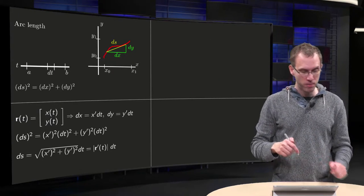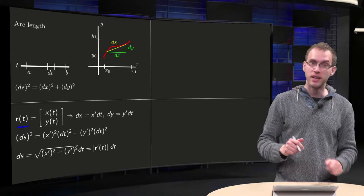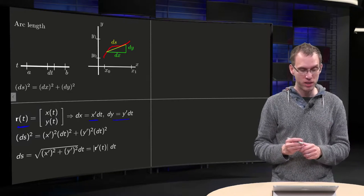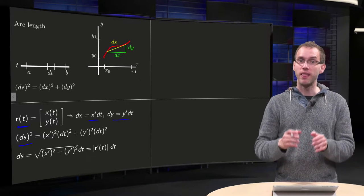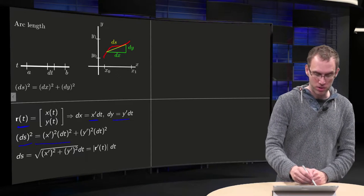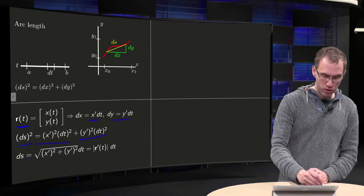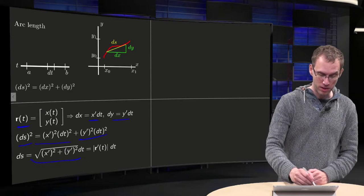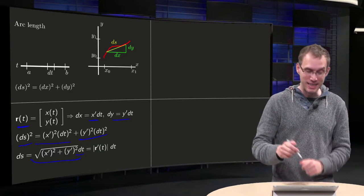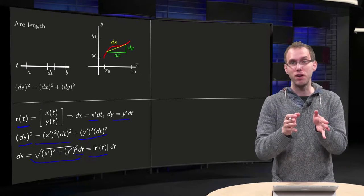So how do you compute this? If you set r of t as its components x of t and y of t, then dx is x prime dt and dy equals y prime dt. What do we get for ds? Well, ds squared will be x prime squared times dt squared plus y prime squared times dt squared. So if you solve for ds, you get the square root of x prime squared plus y prime squared times dt. But this sum x prime squared plus y prime squared is exactly the length of r prime. So ds becomes length of r prime times dt.